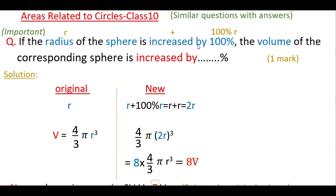If the radius of the sphere is increased by 100 percent, the volume of the corresponding sphere is increased by what percentage? So here the radius is r, and the radius of the sphere is increased by 100 percent. That means the new radius is r plus 100 percent r, and we have to find by what percentage the volume is increased.